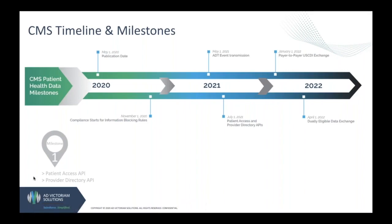Milestone 1 requires certain parties to expose claims and encounter information via APIs, so patients can access the data via third-party applications of their choice.